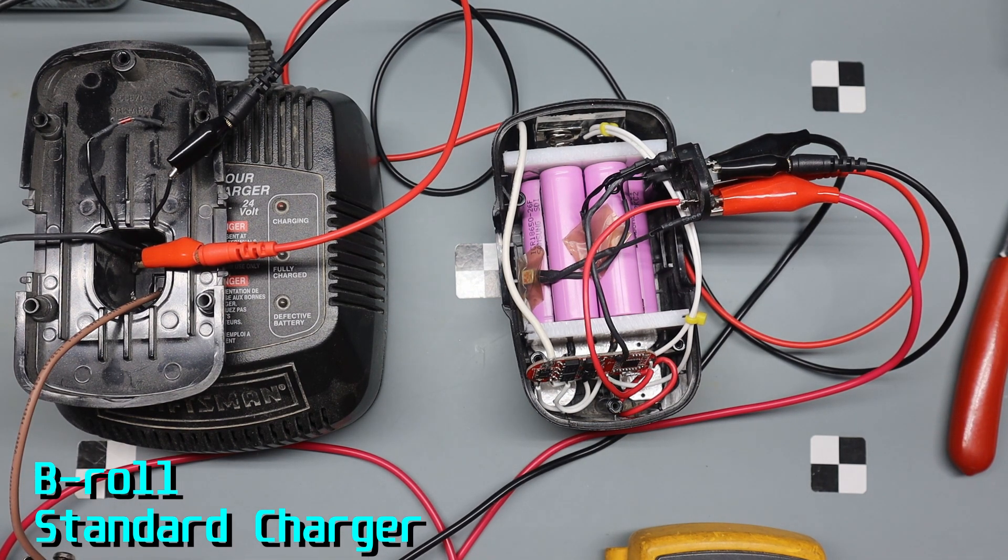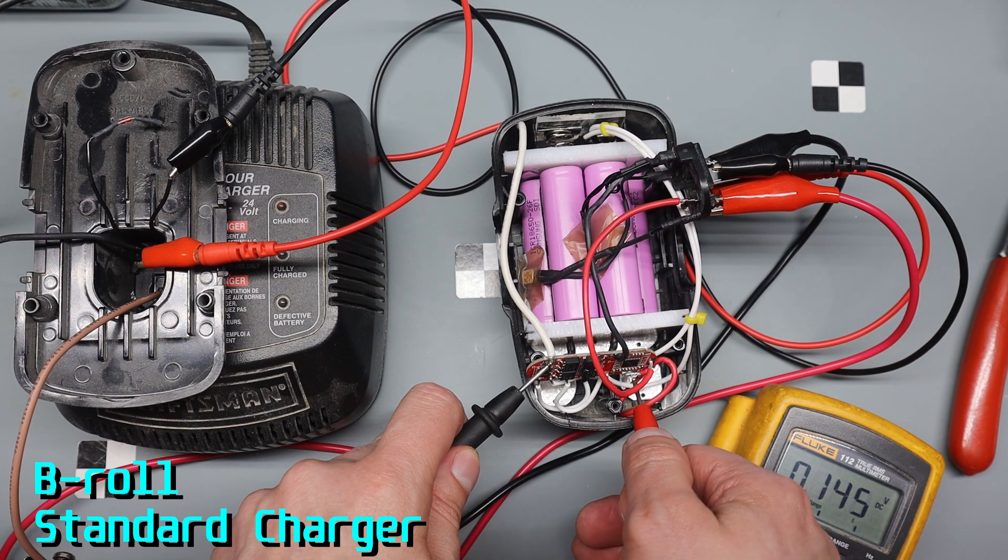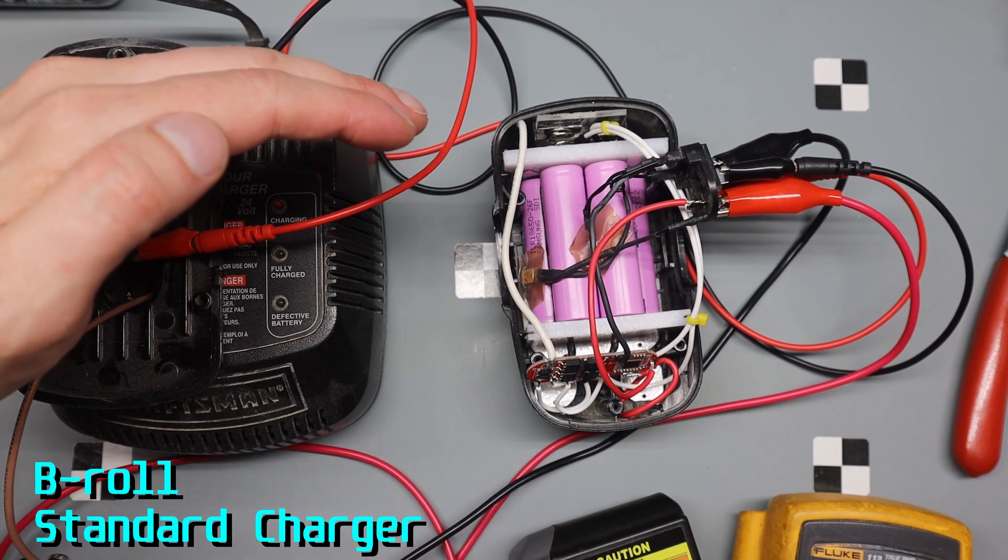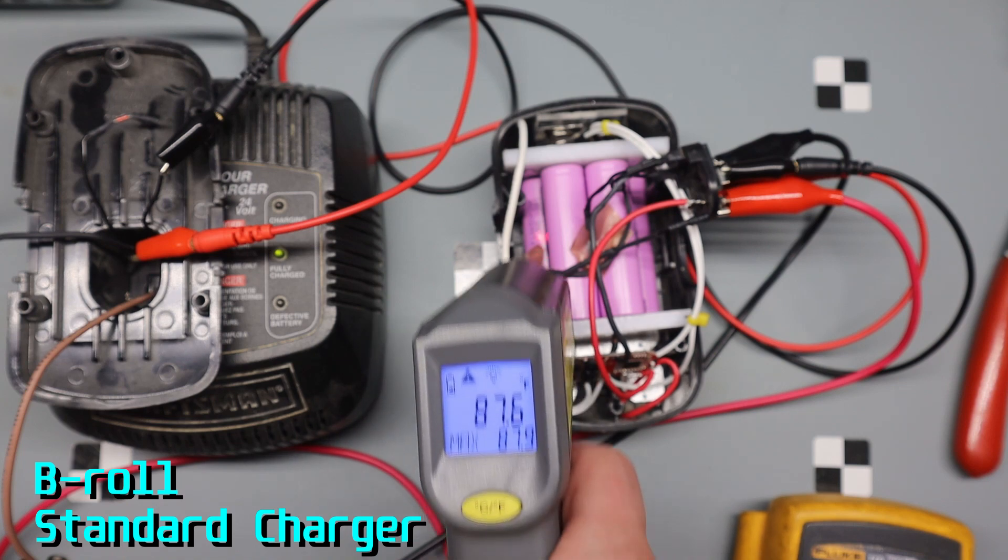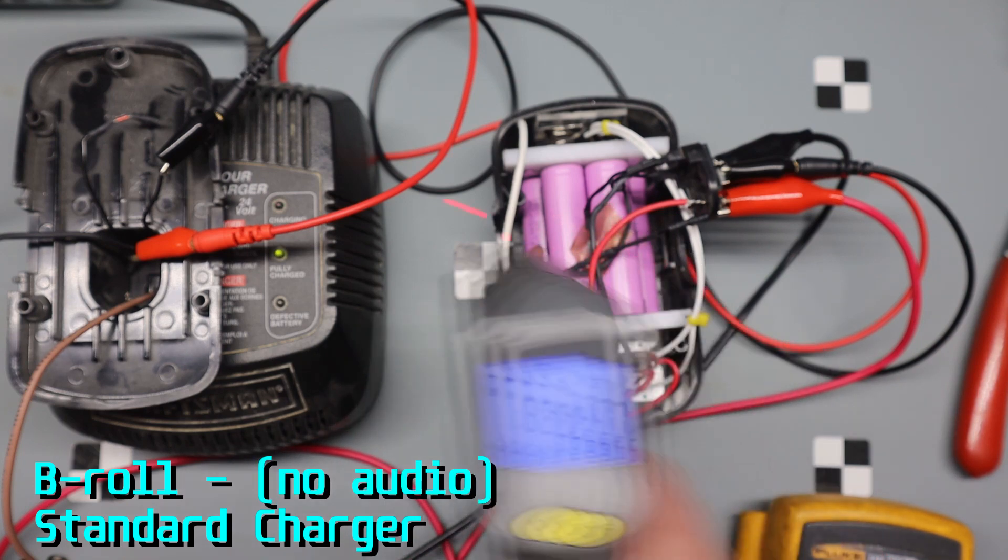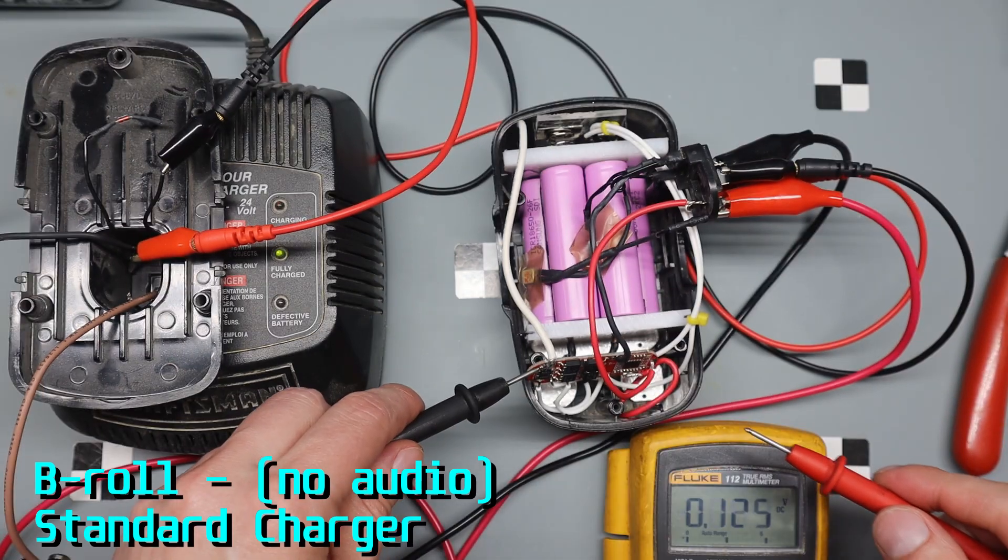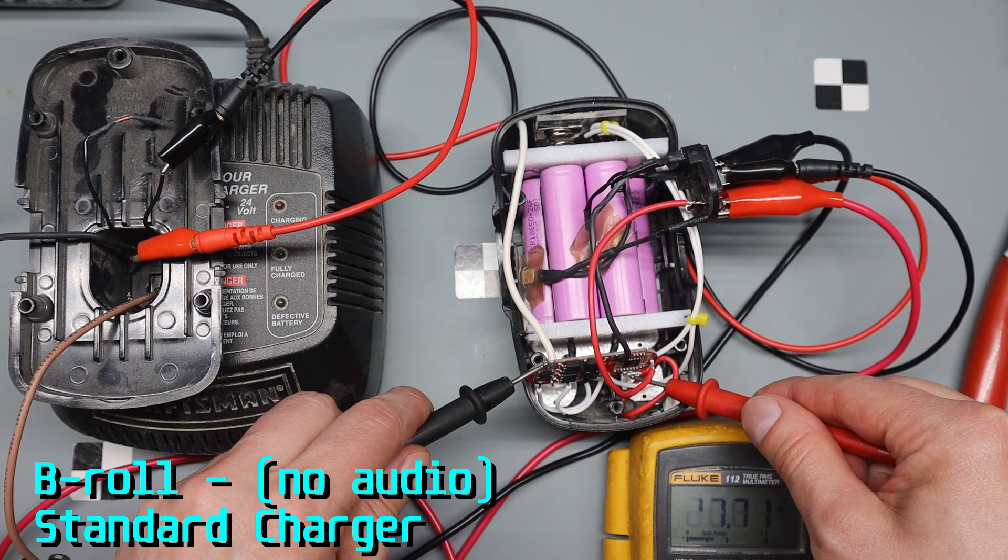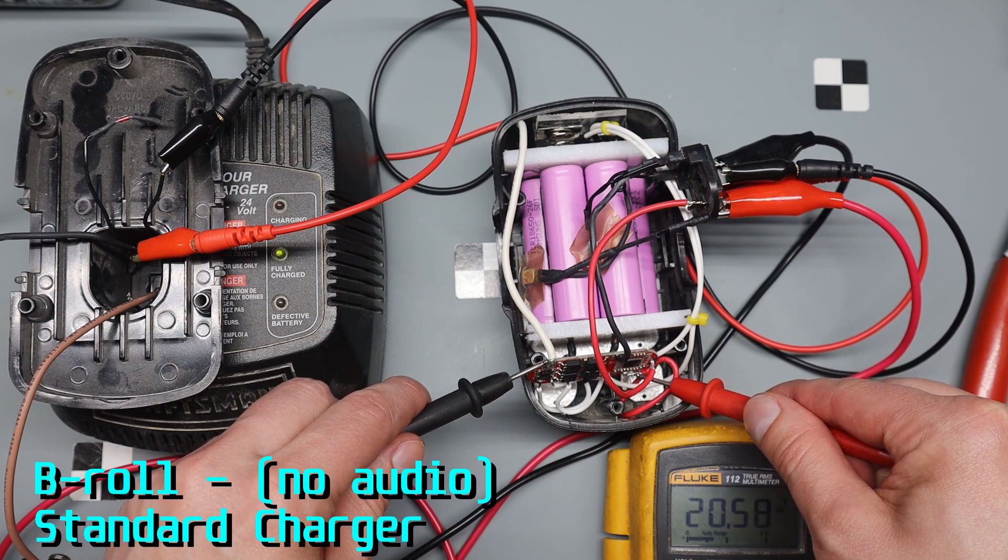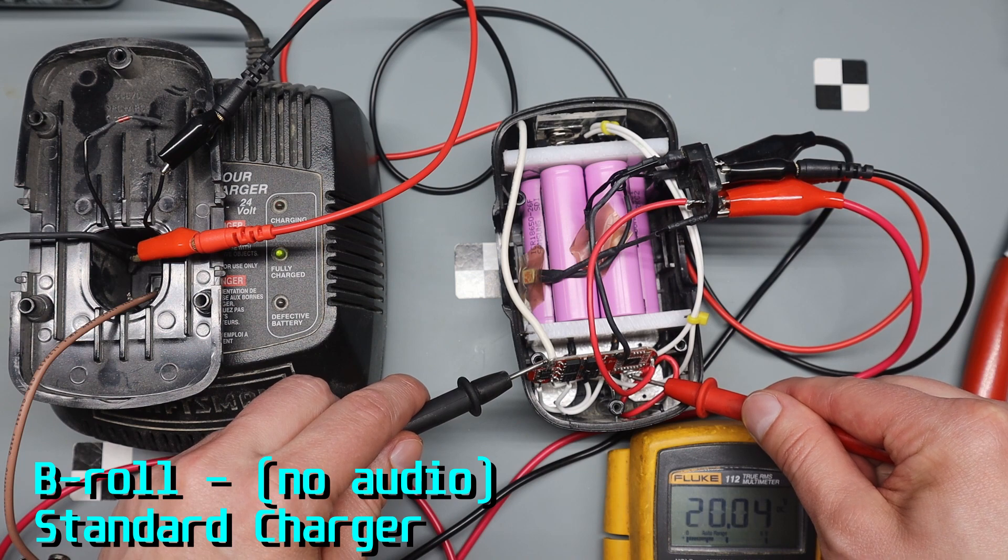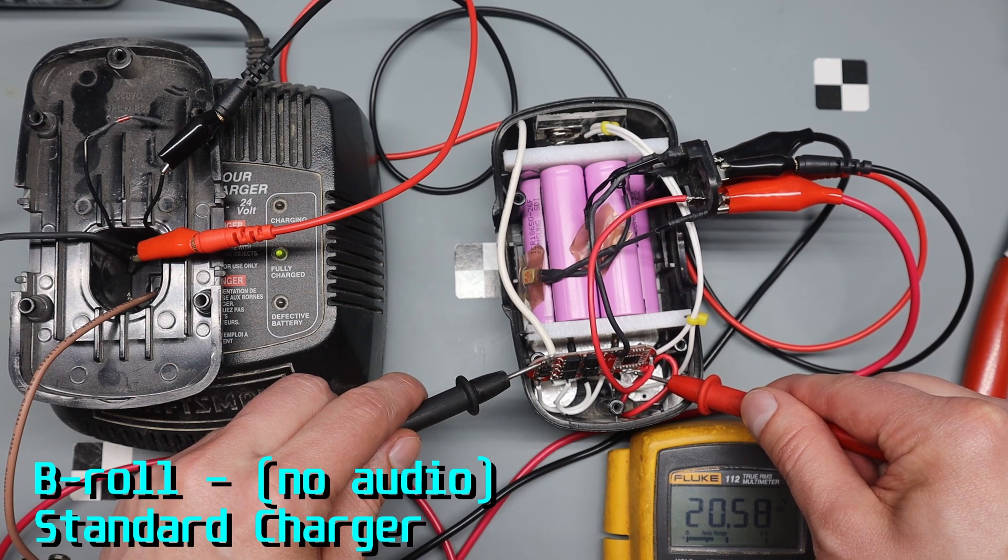Okay, so the normal charger, or the older version of the charger, gave a regular charging light, actually worked just fine. And then when it was done it showed a fully charged single bright light, as you can see.